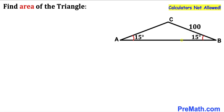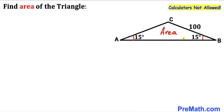Welcome to pre-math. In this video we have triangle ABC such that angle ABC is 15 degrees and angle BAC is 15 degrees as well. Moreover, side length BC is 100 units, and our task is to calculate the area of this triangle ABC without using calculators of any kind.